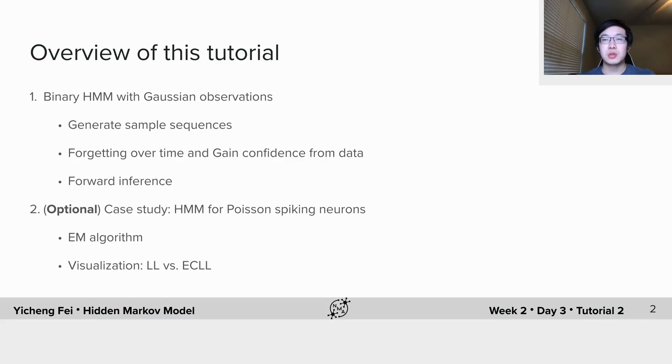This tutorial is divided into two parts. In part one, you will work on a hidden Markov model with binary latent variable, either 0 or 1, and Gaussian observations. You will first build up this model, generate some sample sequences of states and measurements, and then visualize them.